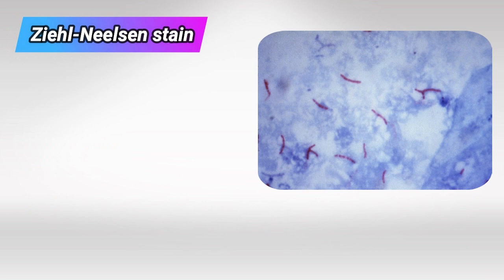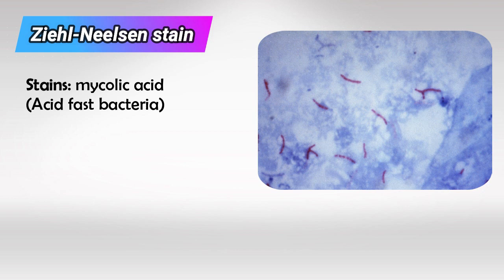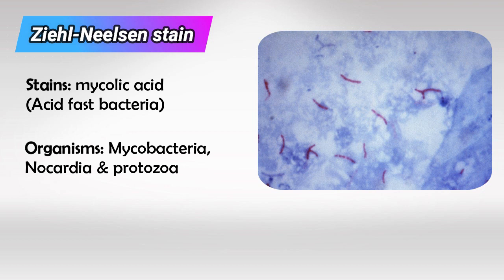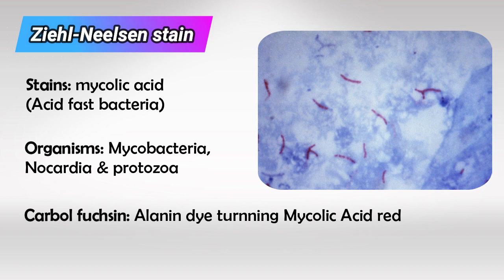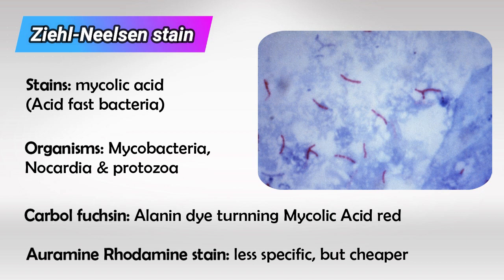Ziehl-Neelsen stain is one of the more important ones — it stains mycolic acid and is mainly used to stain Mycobacteria, Nocardia, and protozoa. Carbol fuchsin can also be used to stain acid-fast bacteria and uses aniline dye. Auramine-rhodamine stain can also be used to stain acid-fast bacteria; it's cheaper but less specific.